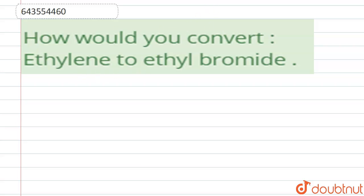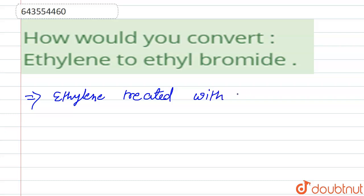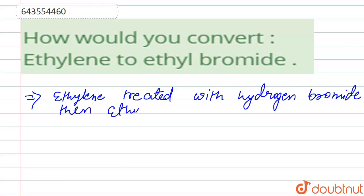The question is: how do you convert ethylene to ethyl bromide? When ethylene is treated with hydrogen bromide, ethyl bromide is formed.